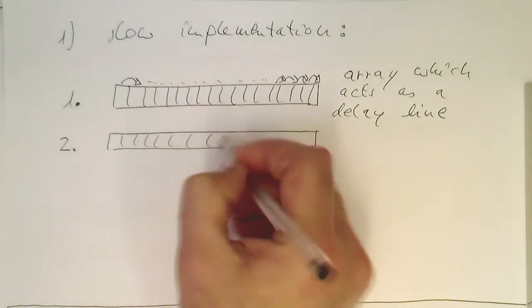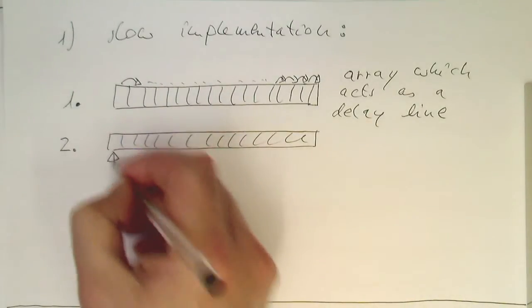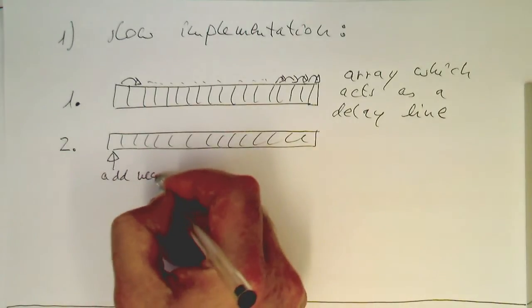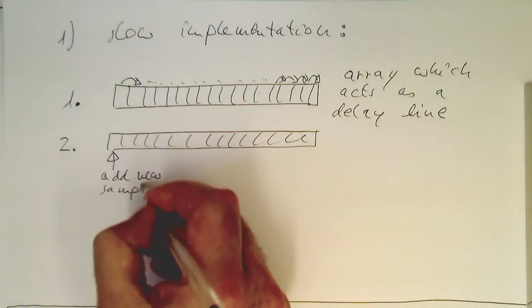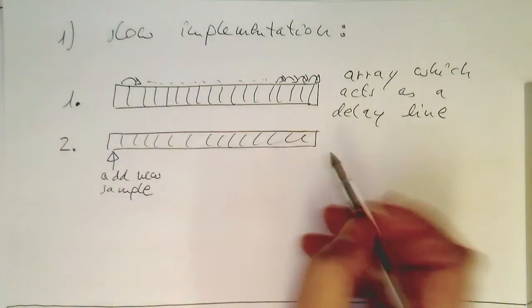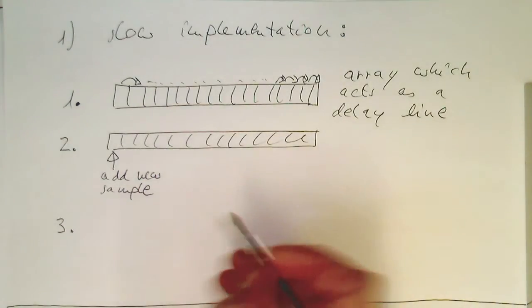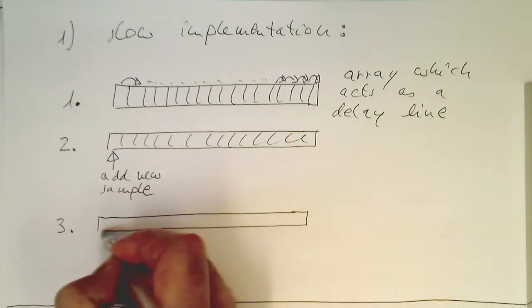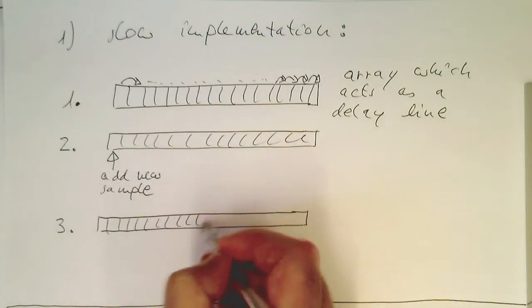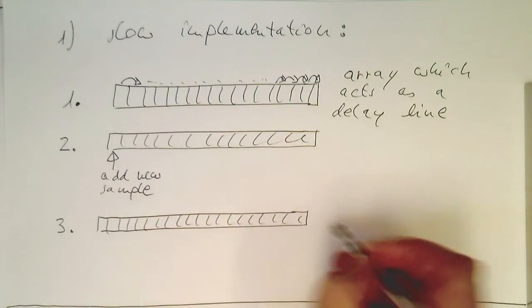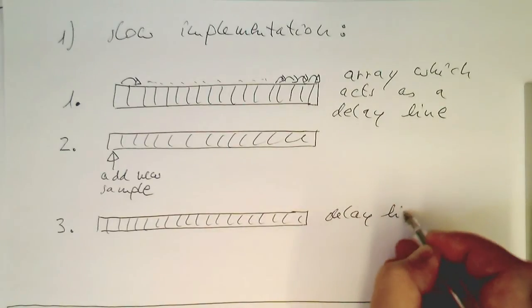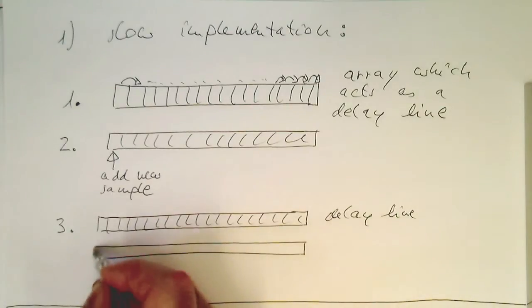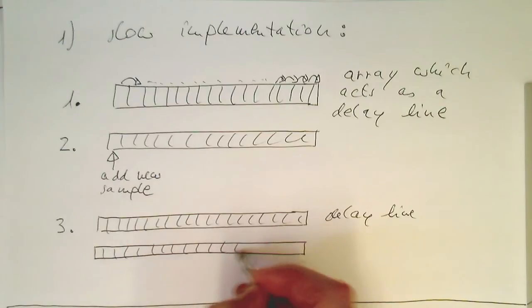And then as a second step here, if we have these divisions here, we just add our new value here. Add new sample. And then as a third step, what we do is, we just take this array here, our delay line. And then we just multiply this element-wise with our impulse response, with our coefficients.